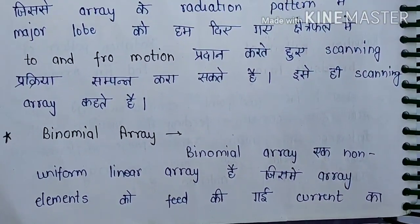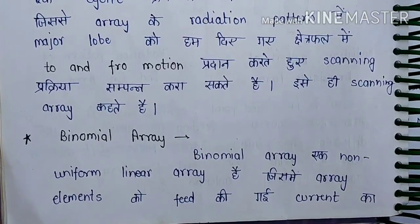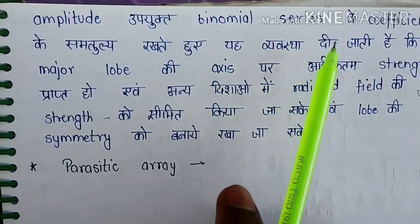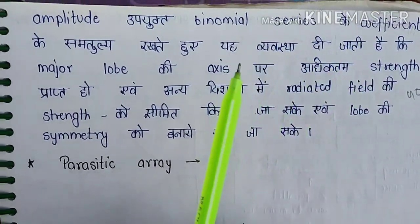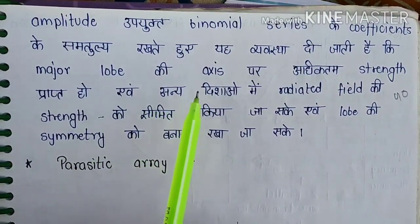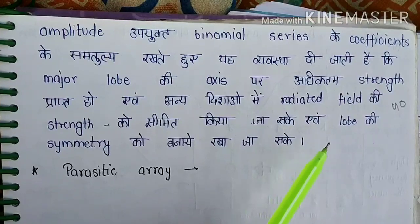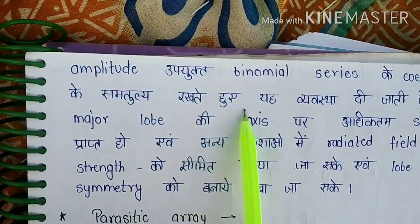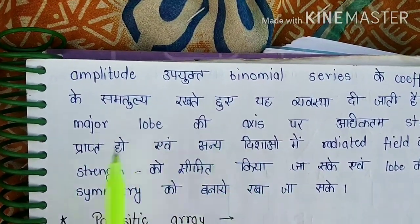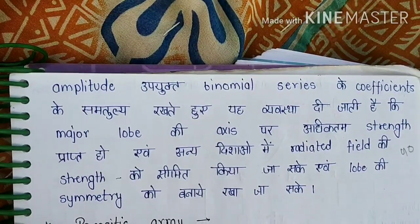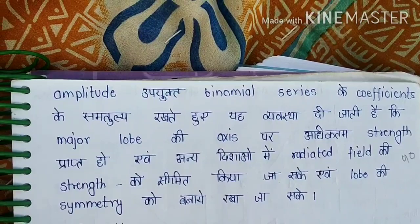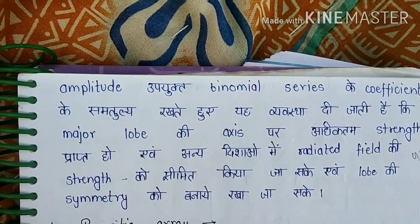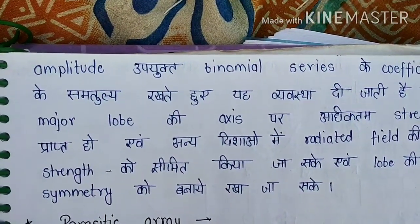Now let's look at the binomial array. A binomial array is a non-uniform linear array. In this array, the elements are fed current whose amplitude follows the binomial series of coefficients. This means the major lobe's radiation field will be symmetrical, forming a symmetric radiation pattern. The distance between elements is set so that the binomial array forms only a major lobe without side lobes.